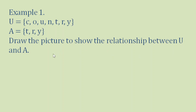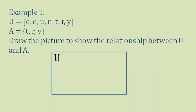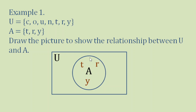First, we draw our universal set represented by a rectangle. Then we draw set A — a circle placed inside the rectangle. We place the elements of A, which are T, R, Y, inside the circle. The other elements, C, O, U, N, are scattered around outside the circle but still inside set U. So this is our drawing.